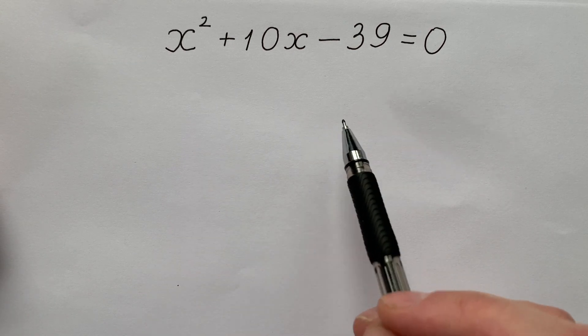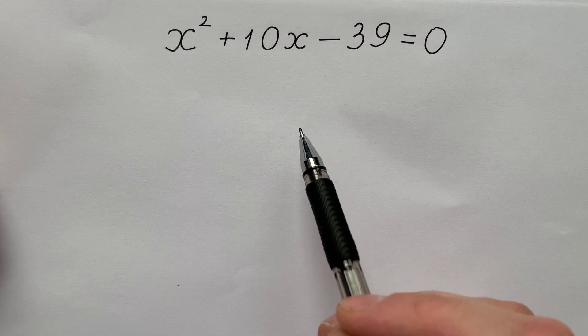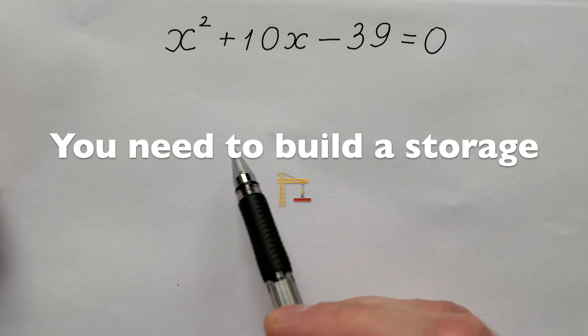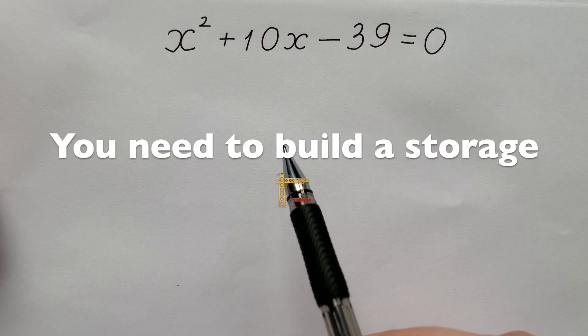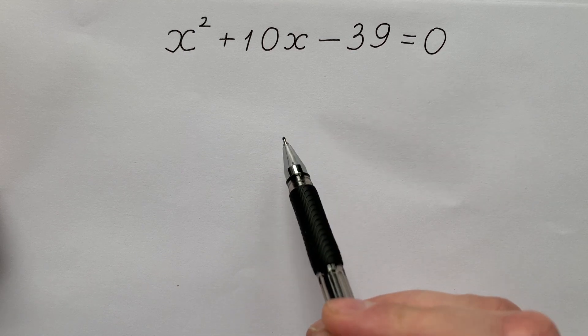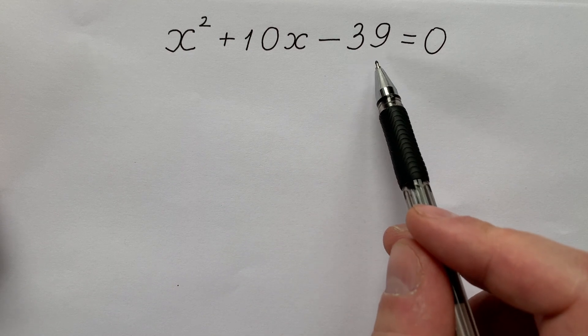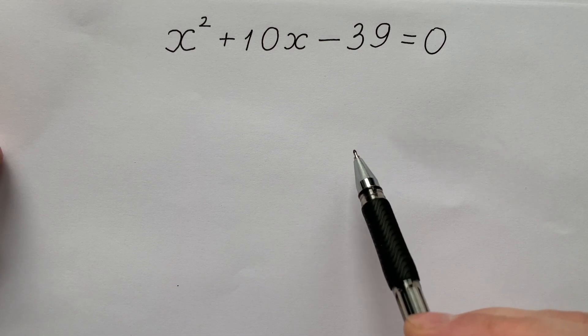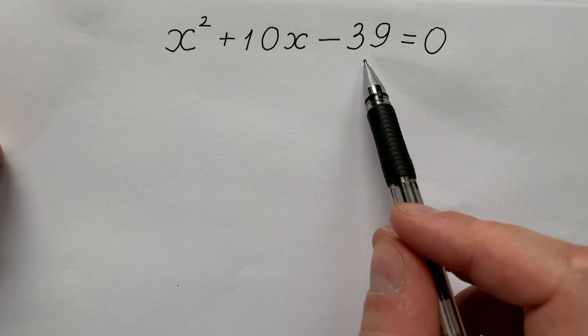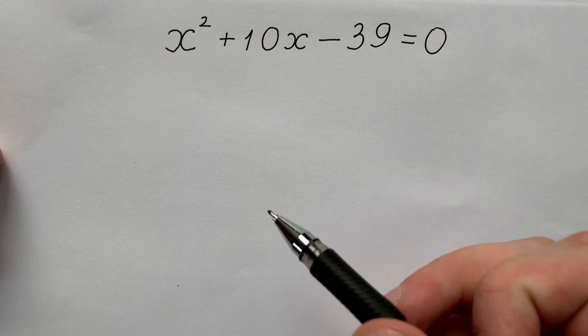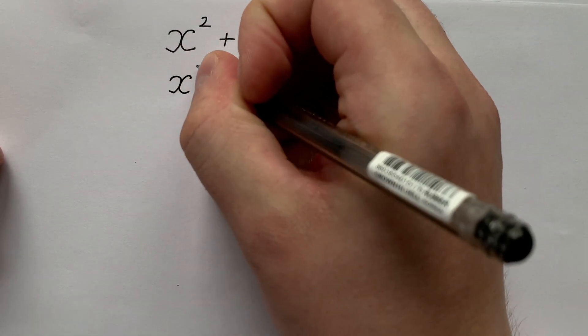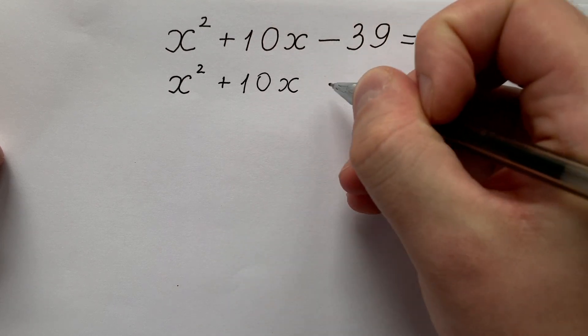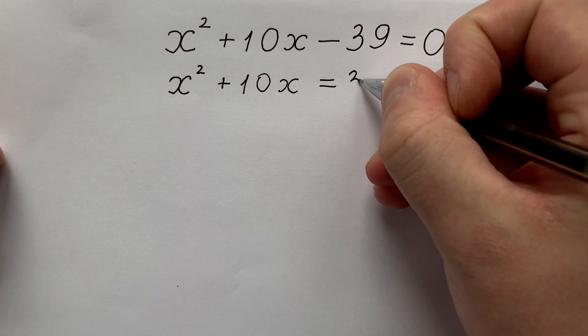At first, he said, let's imagine that you are a construction worker and you need to build a storage with a fixed area. Let's take this area equals to 39 square meters or square feet, no difference. Then let's put 39 to the right side of this equation. And then we have x squared plus 10 times x and it equals to 39.